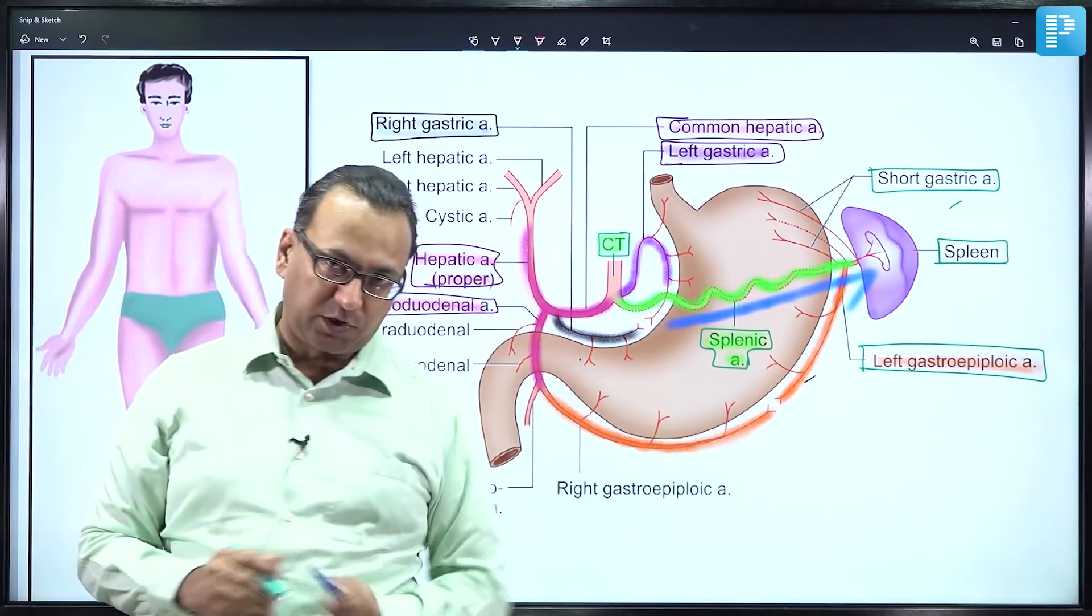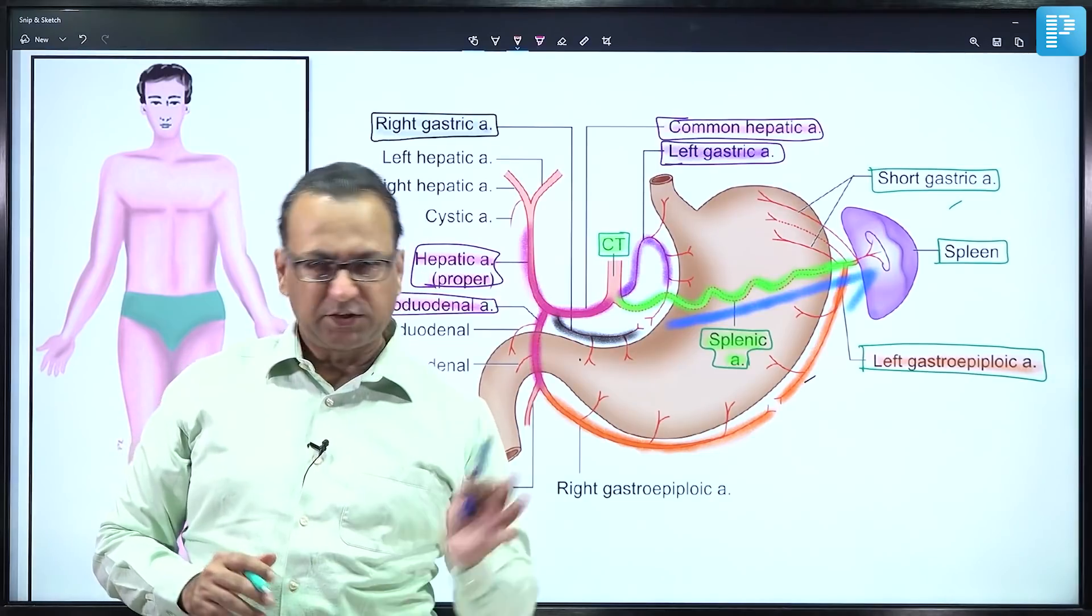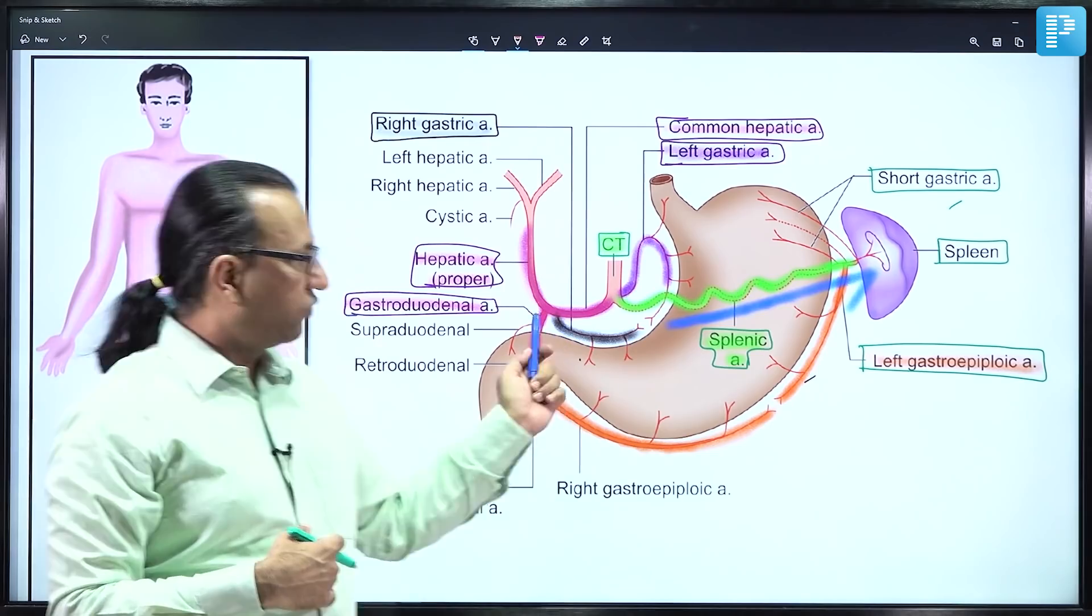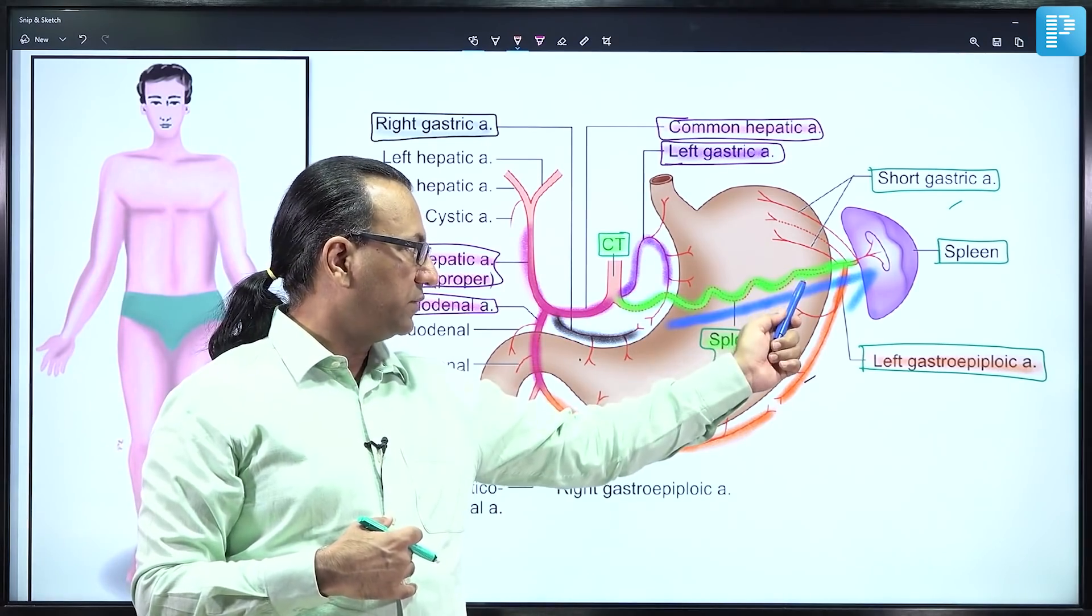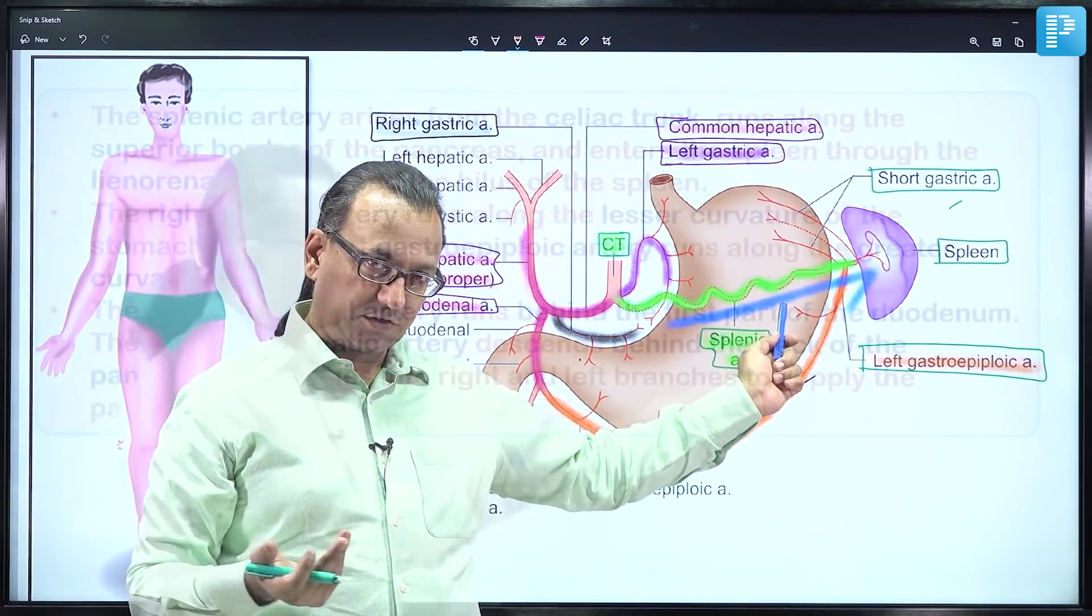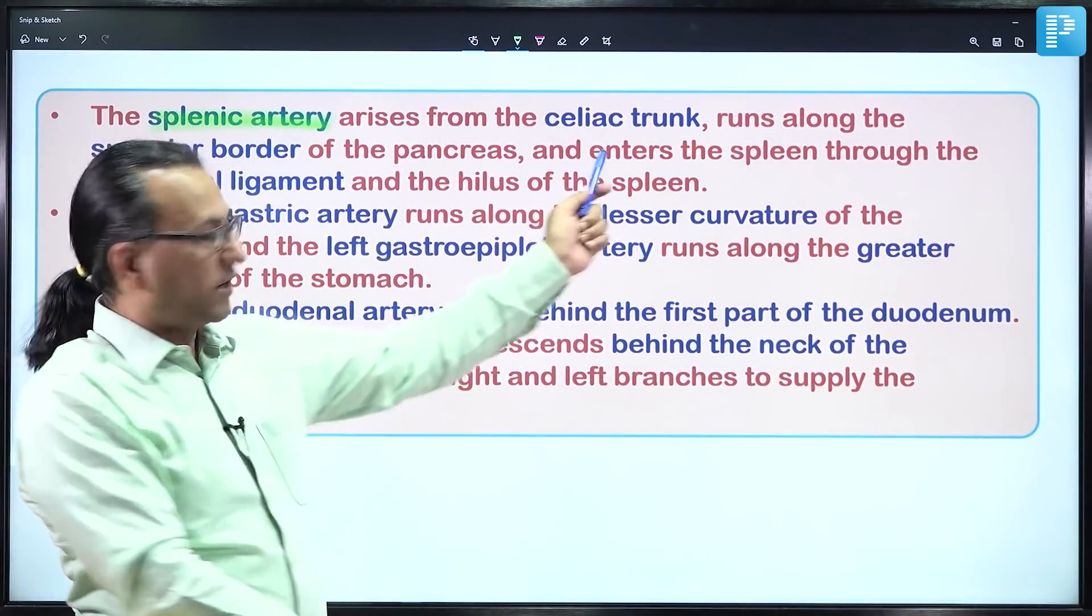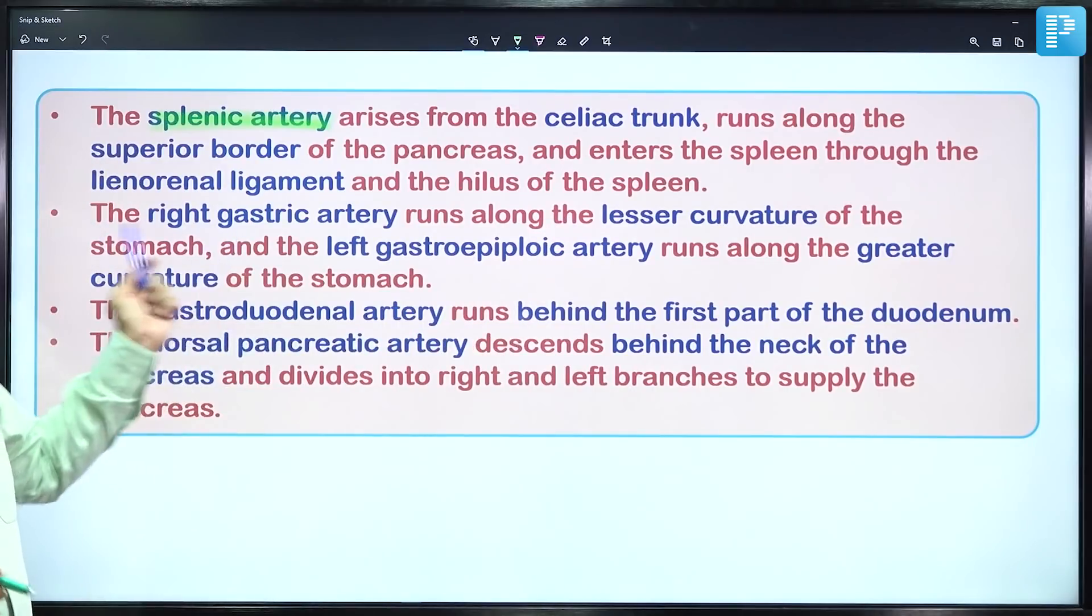Let's refocus on our question. The patient with epigastric pain had a bleed from the splenic artery running on the superior border of the pancreas. Our answer should be the splenic artery, which is a branch of the celiac trunk—the foregut artery.